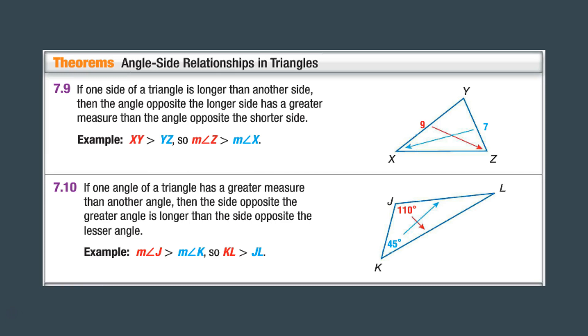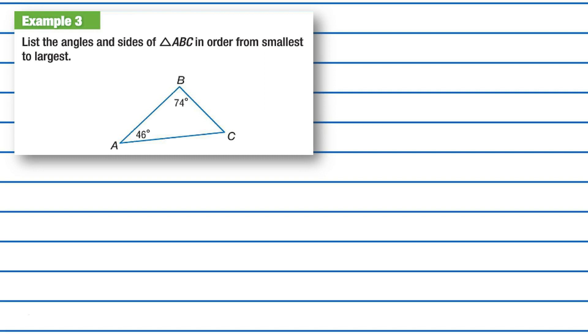And then the same can be said in the reverse, so like the converse of this idea. Now if we know the degrees and we know these line segments, we can say which one's gonna be smaller or bigger. Well, 110 is way bigger than 45, so I know that KL is greater than the one opposite this one, JL.